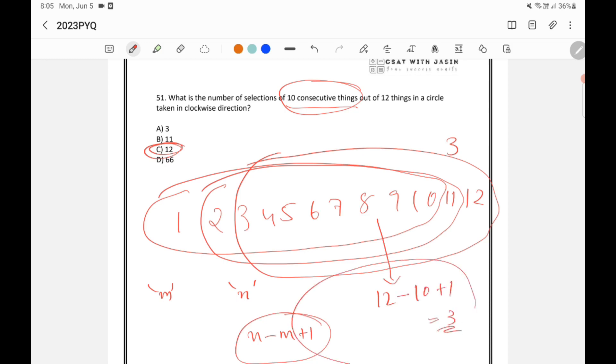So in this way, you can tackle this question. So if it's a circle, it's n itself. If it's a row, it is n minus m plus 1.